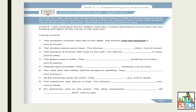The window panes were intact — the thieves [had not broken] them. The verb is 'not to break.' The painting of Picasso still hung on the wall — the thieves [had not taken] it away. The gallery was in order — they [had not put] anything in a mess. Nobody was wounded — they [had not hurt] anybody. The safe was still hidden behind Goggin's painting — they [had not found] it.